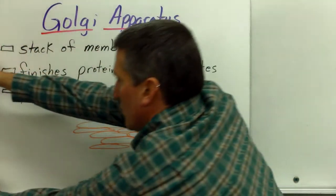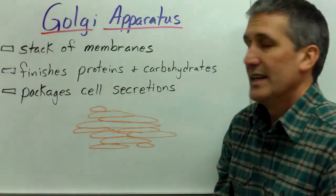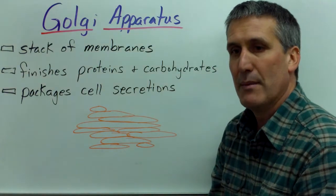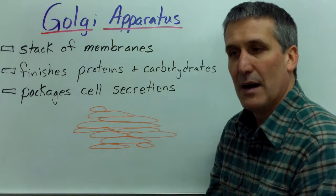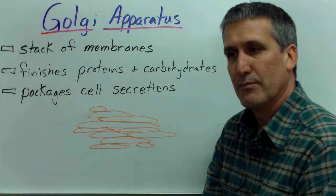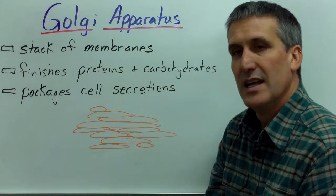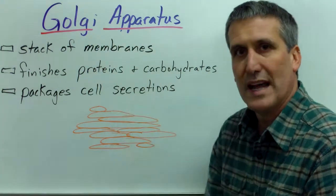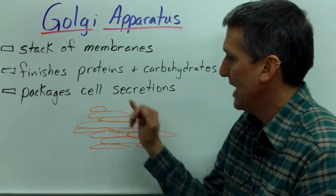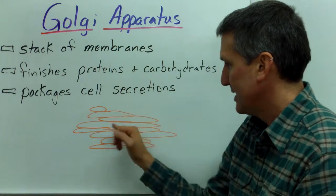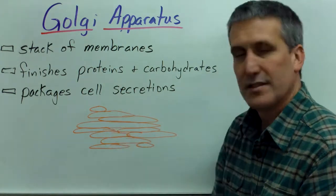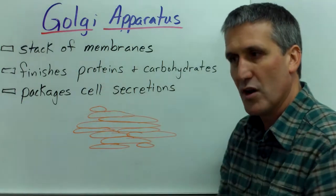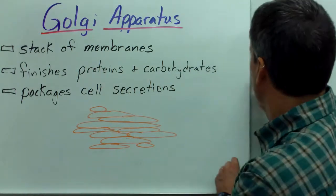The next structure we're going to focus on is the Golgi apparatus, often drawn as stacked membrane sacs. Many complex metabolic reactions occur here — a lot of proteins are finished, carbohydrates are finished, and materials are packaged in membrane sacs that are going to be put outside of the cell membrane. You can distinguish it from the endoplasmic reticulum because it's often not closely associated with the nucleus but drawn off in the cytoplasm somewhere.